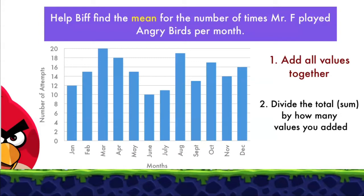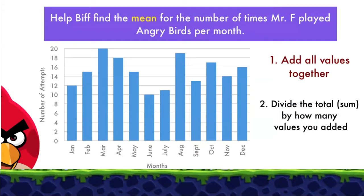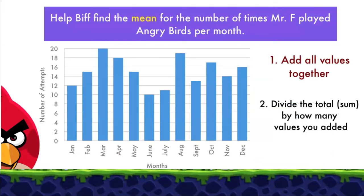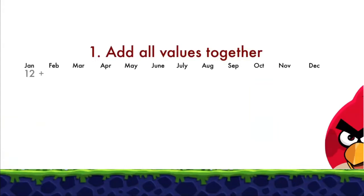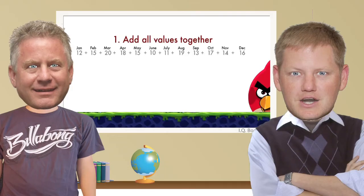So we'll leave this screen up here and have the students work on adding up their values all together. And Biff, you do the same. For January you added 12, in February 15, March was 20, then 18, then 15, 10, July was 11, August 19, November is 14, and December is 16. So there are 12 total numbers there. Did you add all those up?